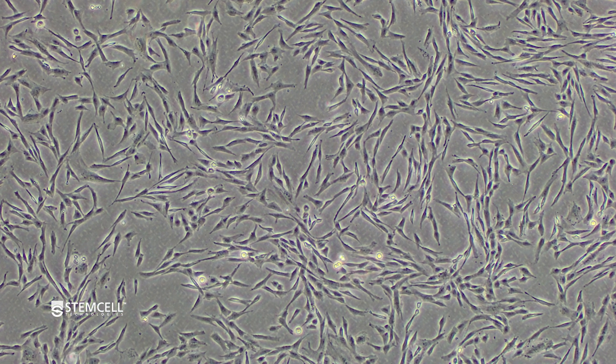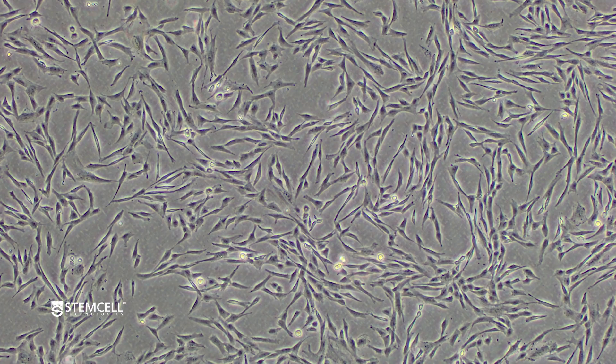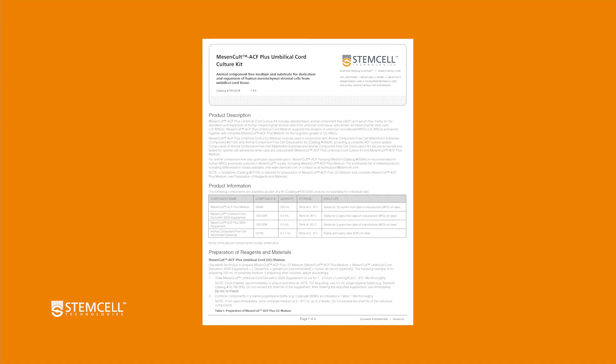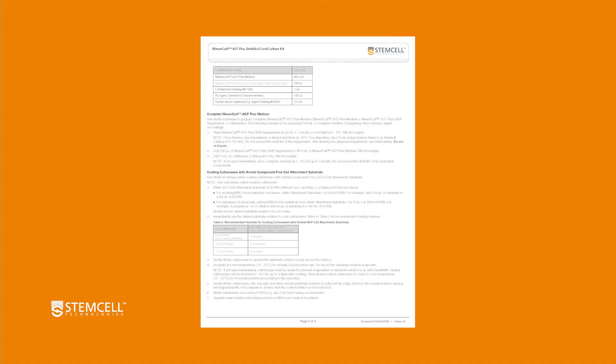If cells grow beyond 90% confluency, their growth rate may be reduced at subsequent passages due to contact inhibition. For a detailed protocol on expansion of human umbilical cord MSCs, refer to the product information sheet on our website.